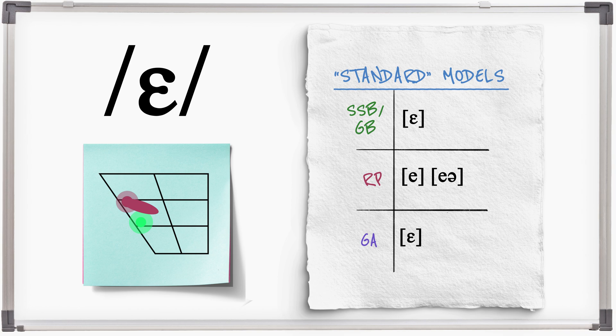General American has an open mid front sound, which can be a little bit centralised or relaxed compared to the British versions. Get ready.